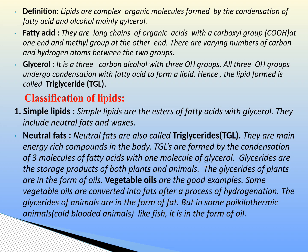The fatty acids are classified into two types: saturated and unsaturated fatty acids. Saturated fatty acids do not contain a double bond. Some important saturated fatty acids found in plants are butyric acid, palmitic acid, stearic acid, caproic acid, etc.